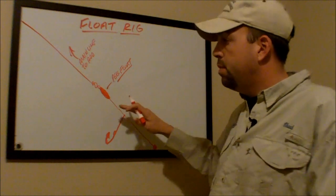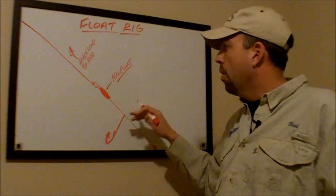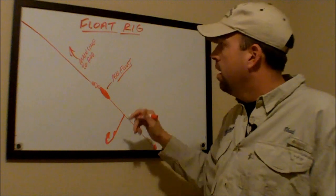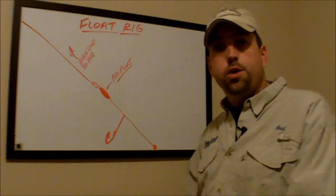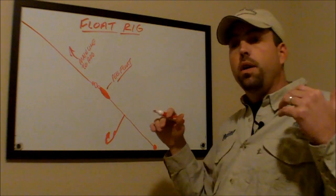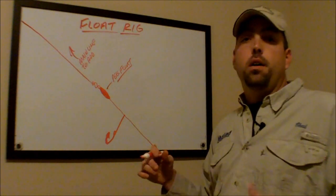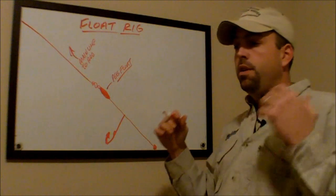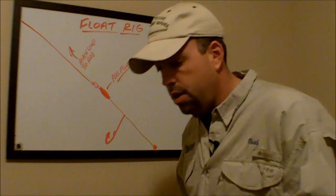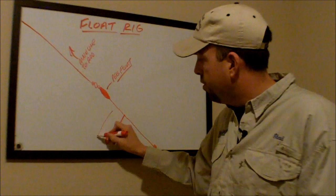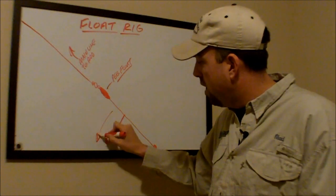What that peg float does is help to suspend this rig up off the bottom of the lake. A lot of times, if you're fishing anchored or even if you're drift fishing, if you can picture your lines running up to your boat, and your boat's rocking back and forth with the waves and the motion of the water, when you do that, your boat goes forward and you get a whole bunch of slack in your line, well, this rig drops down towards the bottom.